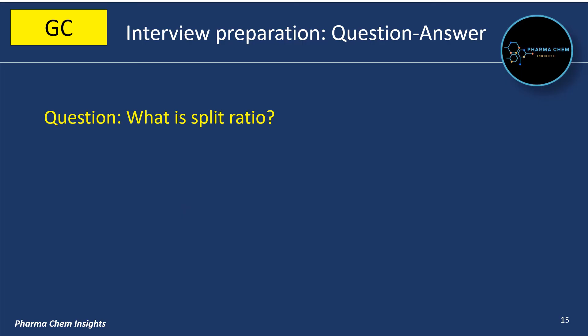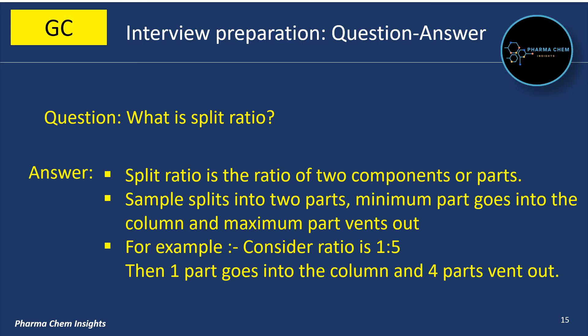What is split ratio? Split ratio is the ratio of two components or parts. The sample splits into two parts — a minimum part goes into the column and the maximum part vents out. For example, consider a ratio of 1:5 — then one part will go into the column and four parts will vent out.